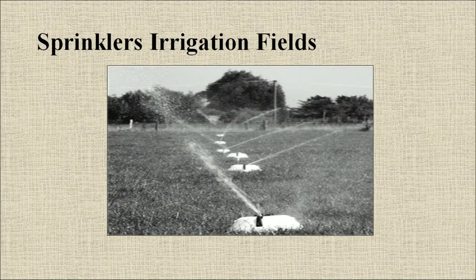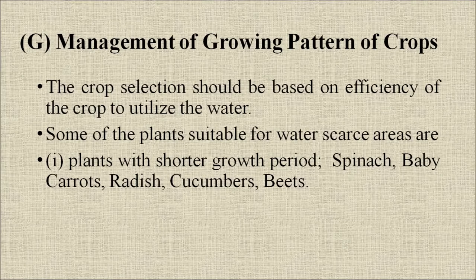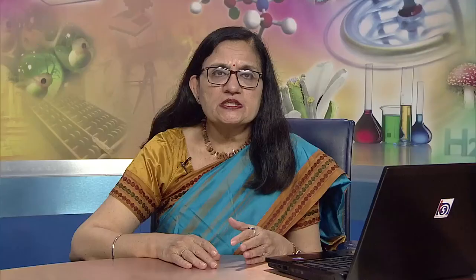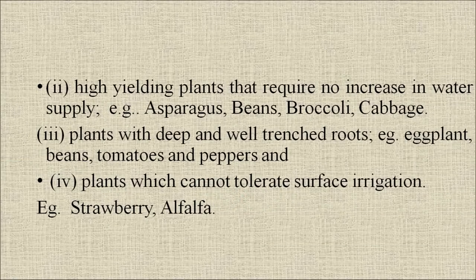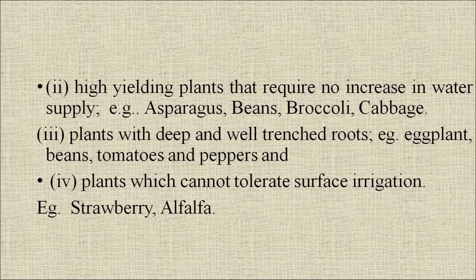This is the use of sprinklers in lawns and big fields, and this is pot irrigation by online drippers. Management of growing patterns of crops: crop selection should be based on efficiency of the crop to utilize water. Plants suitable for water-scarce areas include: plants with shorter growth periods like spinach, baby corn, radish, cucumber, beets; high-yielding plants requiring no increase in water supply like asparagus, beans, broccoli, and cabbage; plants with deep and well-branched roots like eggplant, beans, tomato, and peppers; and plants which cannot tolerate surface irrigation like strawberry and alfalfa.